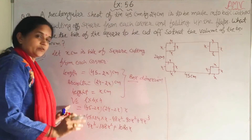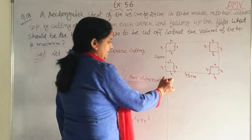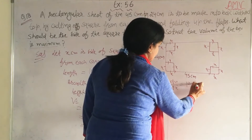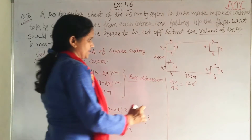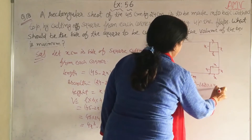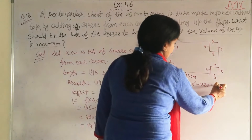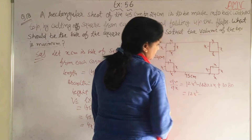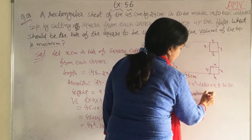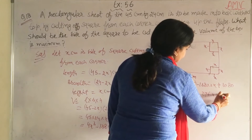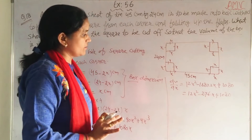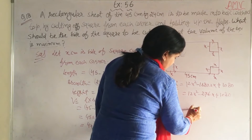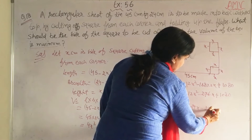Now find dV/dx, the first order derivative. You will get dV/dx = 12x² − 276x + 1080. Next, find d²V/dx², which gives 24x − 276.